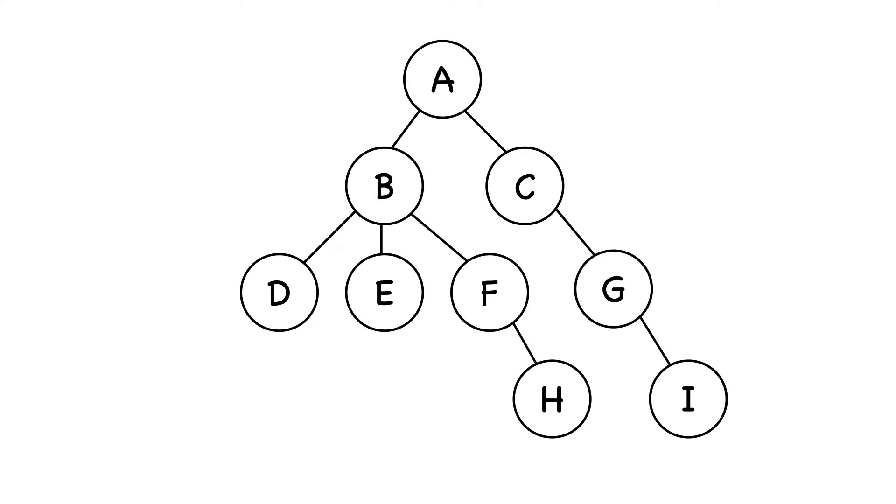Along the way, we'll keep track of two things. First, nodes we visited will be colored black. Nodes that are in the queue, that are in line to be visited, will be colored gray.